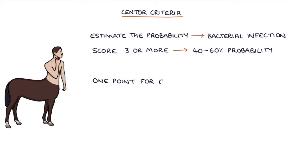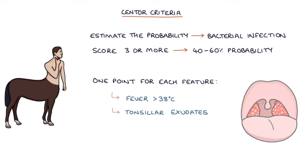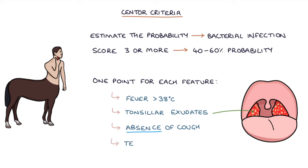A point is given if each of the following features are present: a fever above 38 degrees Celsius, tonsillar exudates, the absence of a cough — so if the patient has a cough this doesn't score a point, but if they don't have a cough this does score a point — and tender anterior cervical lymphadenopathy, or palpable enlarged lymph nodes.